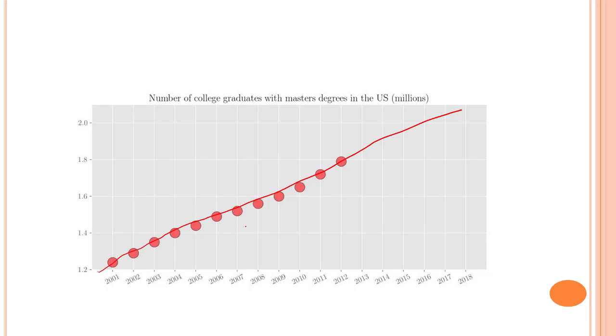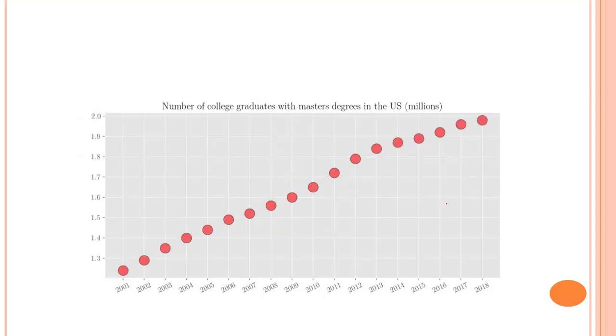From this line, we can predict future values. For 2013, we can say there will be somewhere between 1.8 and 2.0 million - that is 1.85 million graduates in the year 2013. Similarly, we can predict it for 2018 and further. That is how regression analysis helps us - we can predict future points.